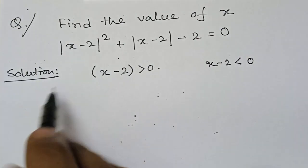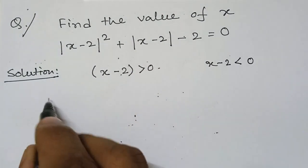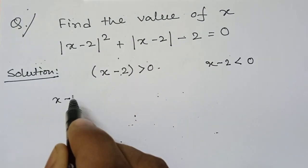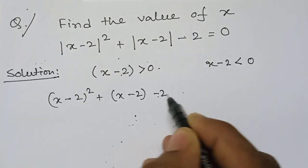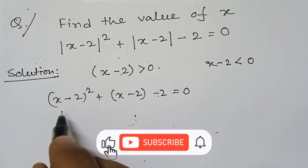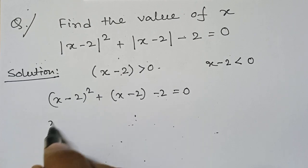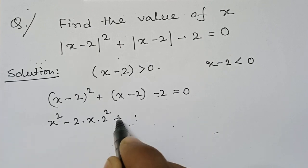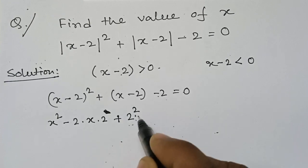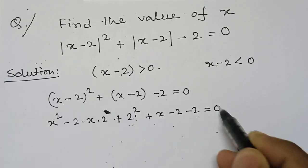Let us consider the first case when x minus 2 is greater than 0. So this equation will be reduced to: x minus 2 whole square plus x minus 2 minus 2 equals 0. If we break this with the help of the (a minus b) whole square formula, this will become x squared minus 2 times x times 2 plus 2 squared, plus x minus 2, minus 2 equals 0.